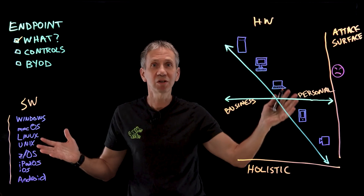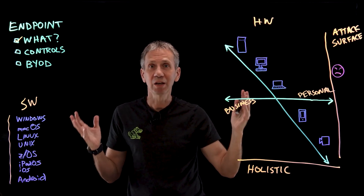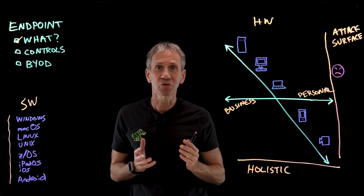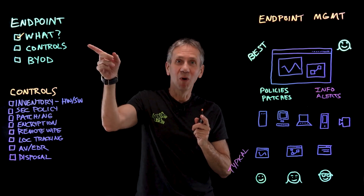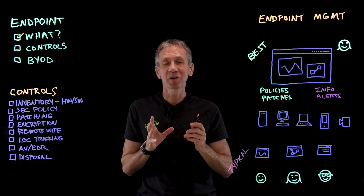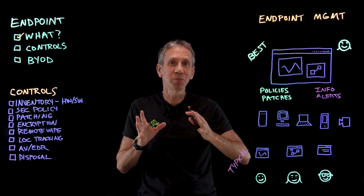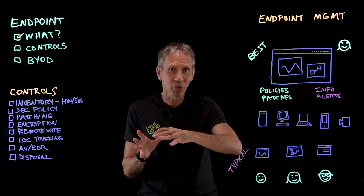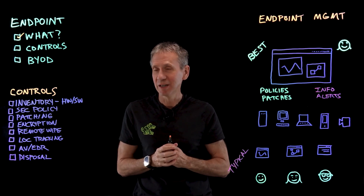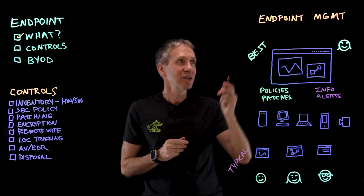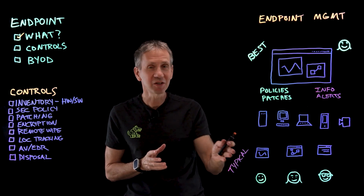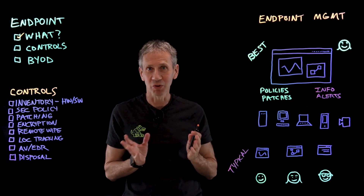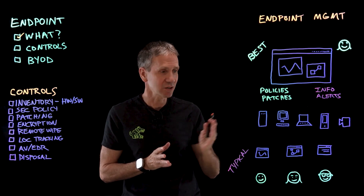So all of this endpoint complexity is why we need to do controls. Now let's talk about what the security controls are that we need to put on those endpoints to make them secure — endpoint management systems and how we operate these things. We'll start with typical practice, then move to best practice.